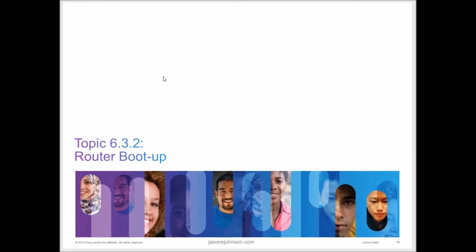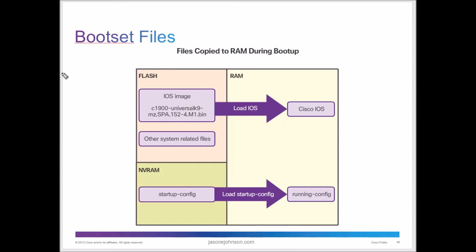Let's look at the router boot-up process. When power-on self-test runs, flash boots up and provides the IOS image. The IOS loads, along with other related system files. Then the startup configuration loads into RAM — setting the banner, login passwords, usernames, and any other configuration information — so the device can begin operating.